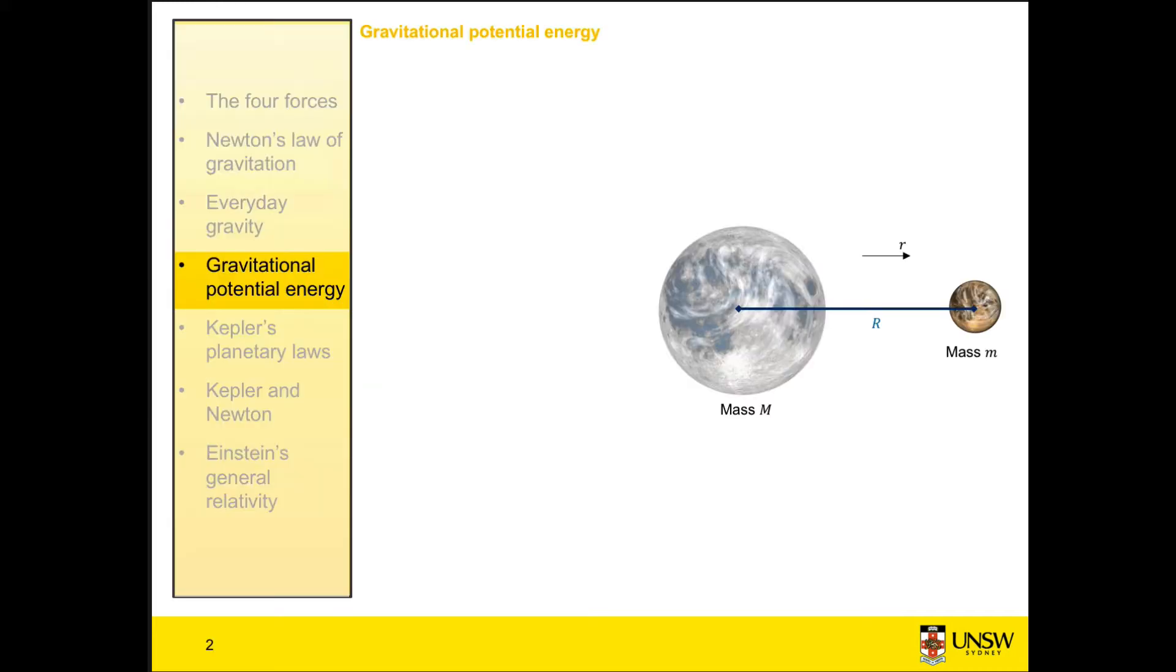Here we're going to look at the gravitational potential energy for a small planet mass m at a distance r from a larger planet mass M. I've defined the direction along the radial axis r as positive and pointing outward.